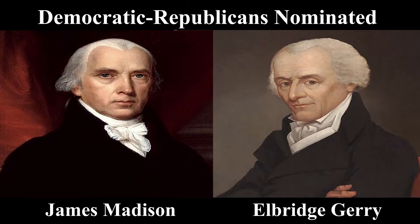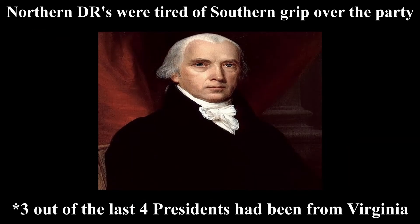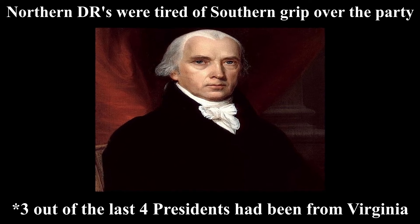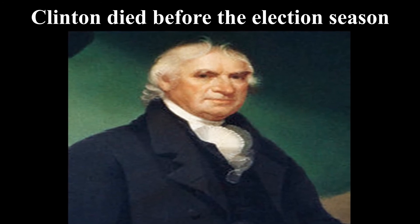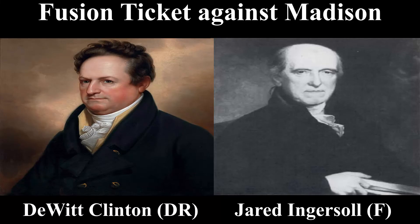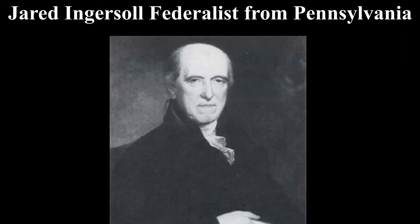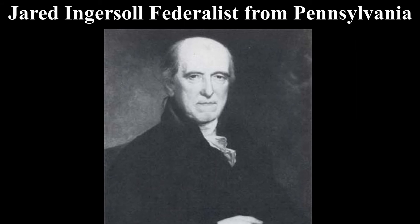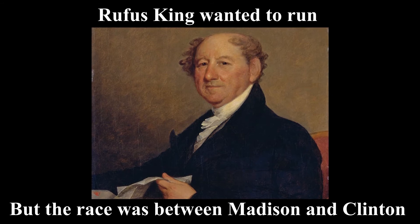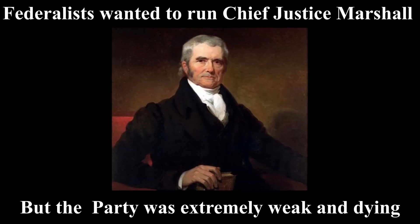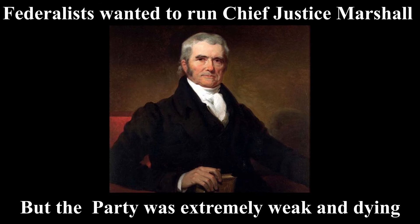In the end, they nominated Madison again, this time with northerner Gerry for Vice President. By 1812, the Northern Democratic Republicans had grown tired of the Southern grip over their party. They wanted George Clinton to go against Madison, but he passed away before the election season. Instead, the Northern faction nominated a fusion ticket with New York City Mayor DeWitt Clinton for President, alongside Federalists from Pennsylvania and Attorney General Jared Ingersoll. Rufus King wanted to run one-on-one against Madison, but the Federalists weren't a key figure in this election. They also considered running Justice Marshall, but Marshall was more influential where he already was.